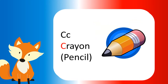C is for crayon, but the English word meaning is pencil. It's like a reverse — it's not the crayon that we use for coloring; it's the pencil that we use for writing.